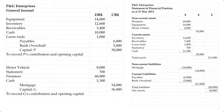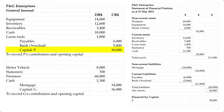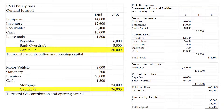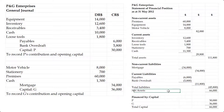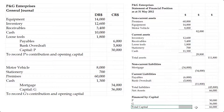Net assets has to be financed by something — usually capital. The capital for P was 30,000 and the capital for G was 36,000. When you add 30 and 36, you get 66. So net assets, which is assets minus liabilities, equals capital.